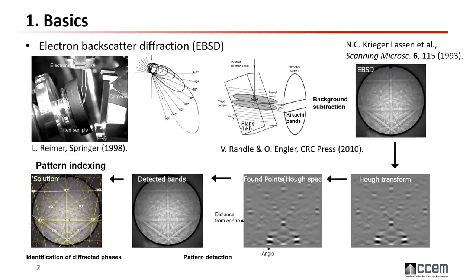EBSD stands for electron backscatter diffraction. As you can see from this schematic, when your electron beam arrives on a well-polished sample which is highly tilted to 70 degrees, your backscatter diffraction will be projected onto your EBSD camera. After that, the diffraction pattern will be indexed by software using a lookup table, so that you can do either crystal orientation mapping, strain mapping, or even phase identification.